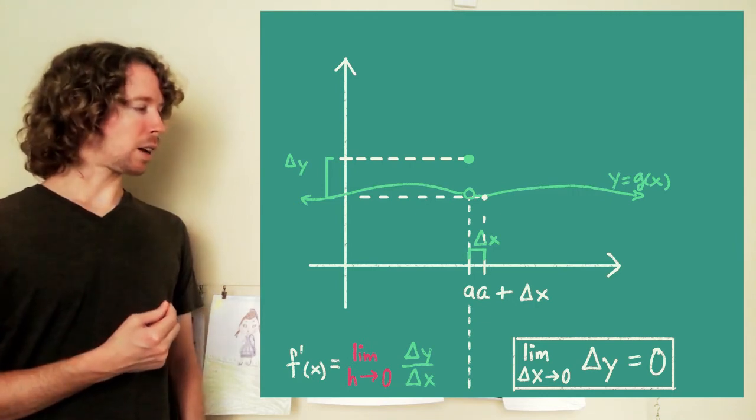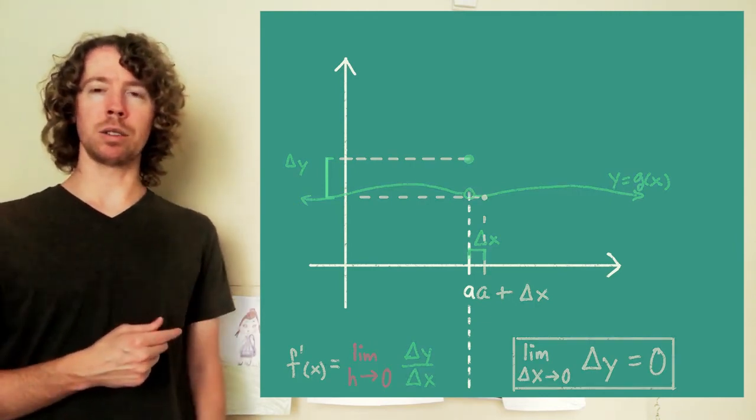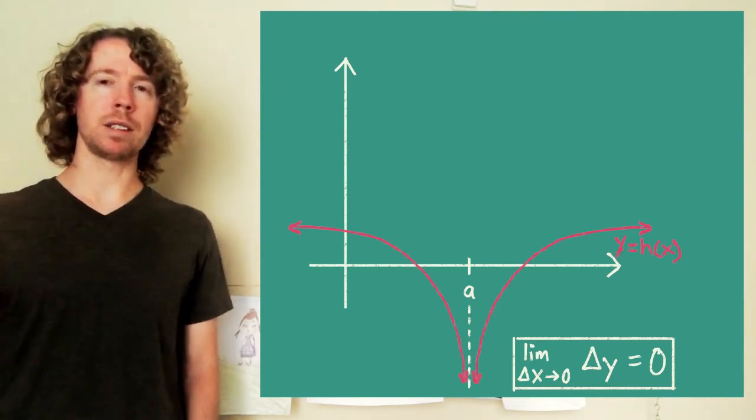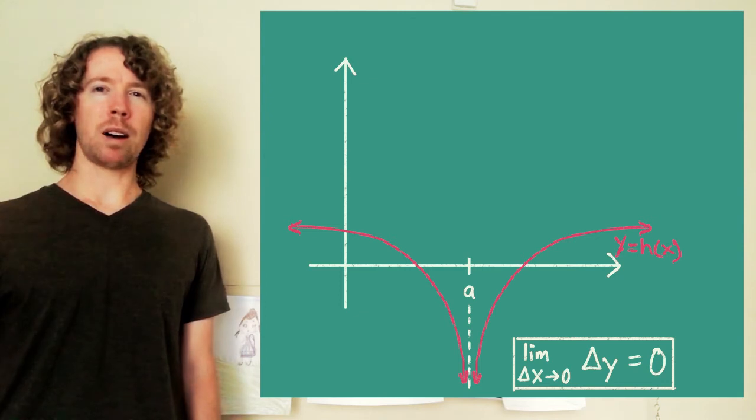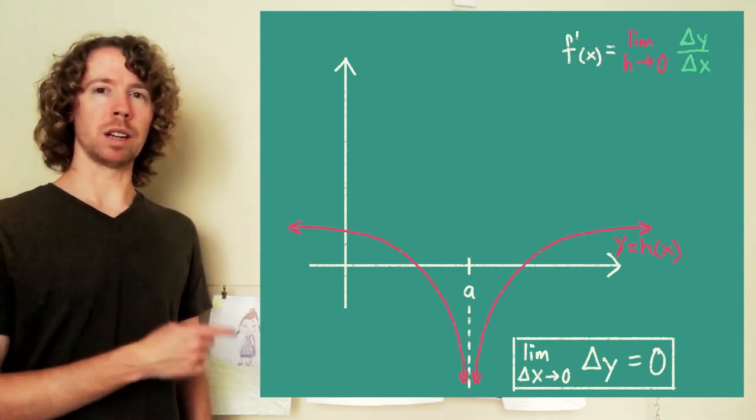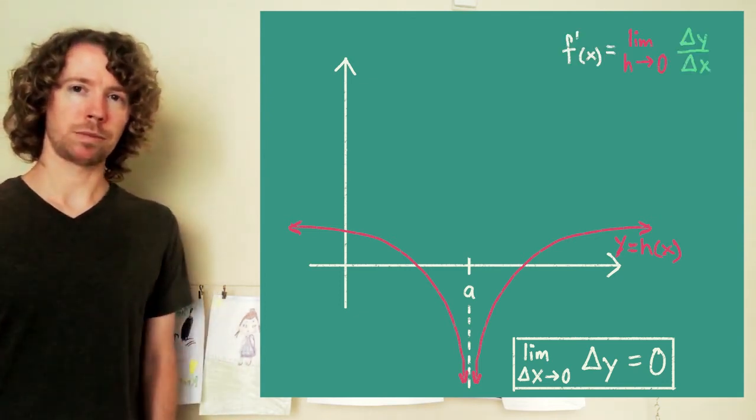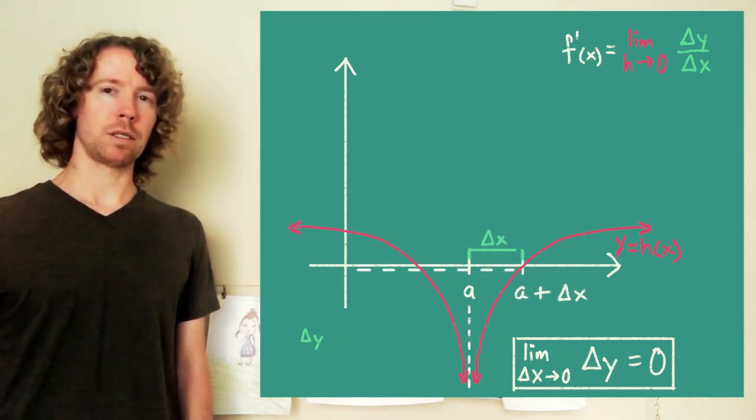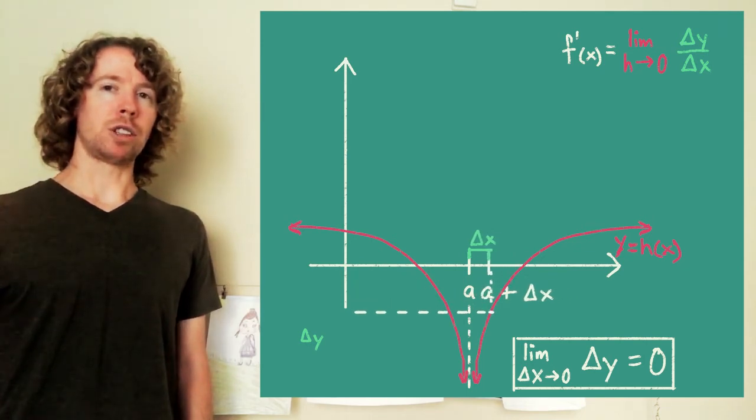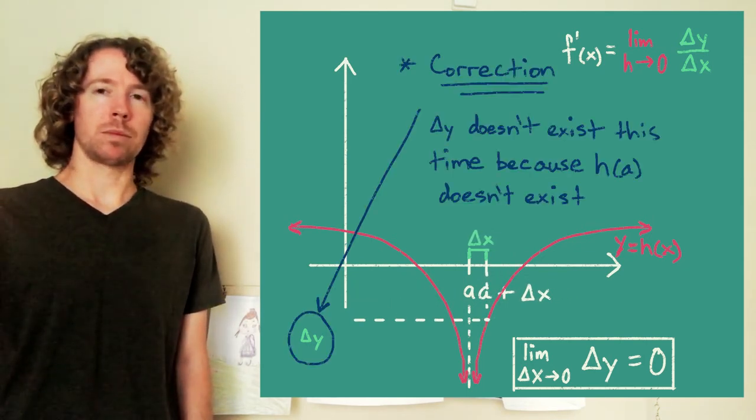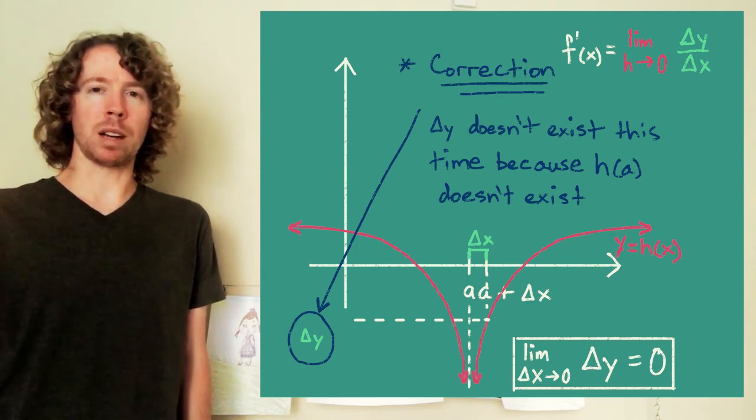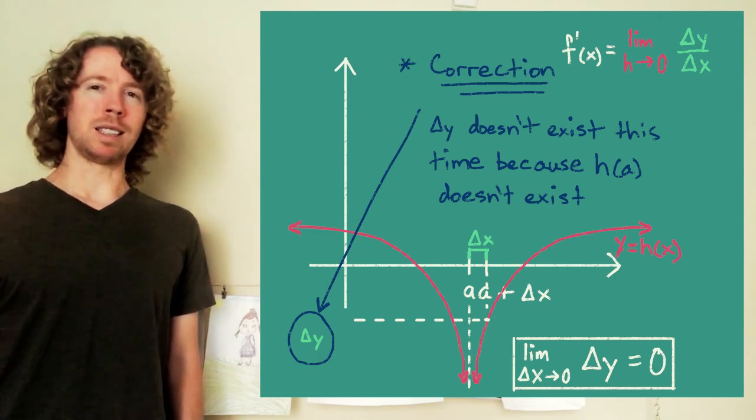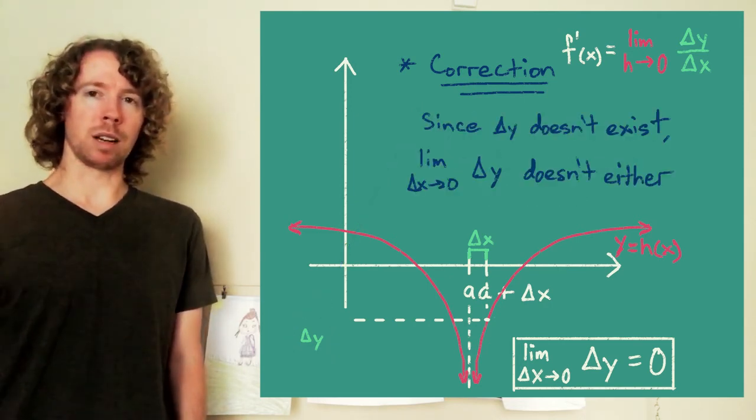And then let's look at this one where you have this infinite discontinuity, where the graph is approaching either infinity or negative infinity. And let's think about what's happening in the limit of delta y over delta x for this one. As we let that change in x shrink down to zero for this function, the change in y is just growing. It's getting bigger and bigger, either in the positive direction or the negative direction, depending on how we drew this. But the delta y is just getting bigger and bigger as the delta x shrinks down to zero.